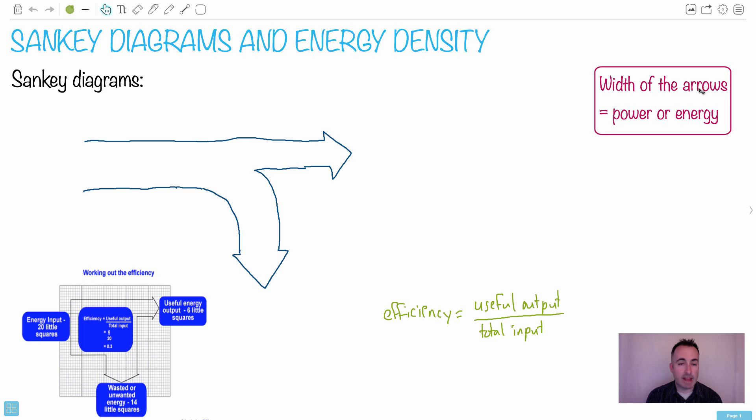What does this normally represent? These widths of the arrows, that's the power or the energy. So however wide these ones are, for example this width right here, that will tell you the energy in. We could say this could be in joules or whatever. And this right here will be what we call the useful energy out. This is what's going to be really important here. Remember this could also be power or whatever.